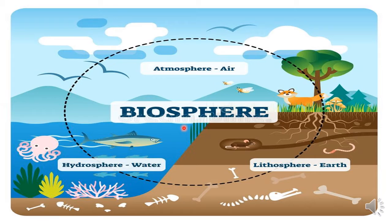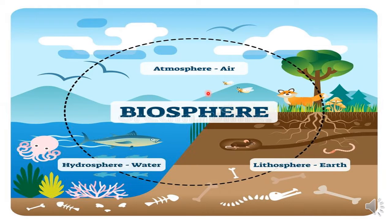Understood? Abiotic and biotic together form the biosphere, and both are interdependent. The biotic environment is interdependent on the abiotic environment. For example, a fox has lungs and needs oxygen from air, needs land to live on, and needs water to drink. So the fox is dependent on all three abiotic components. Abiotic and biotic together form the biosphere.